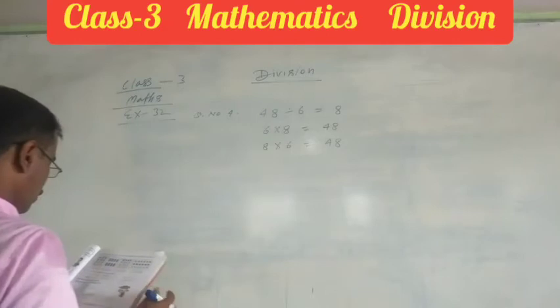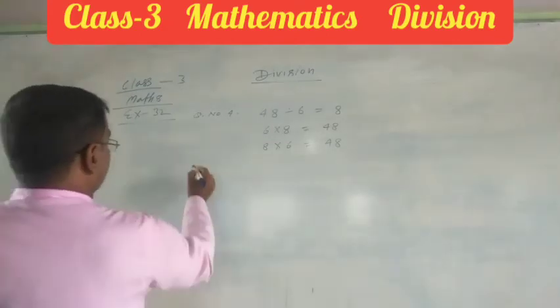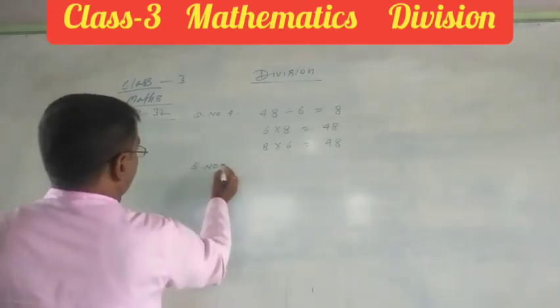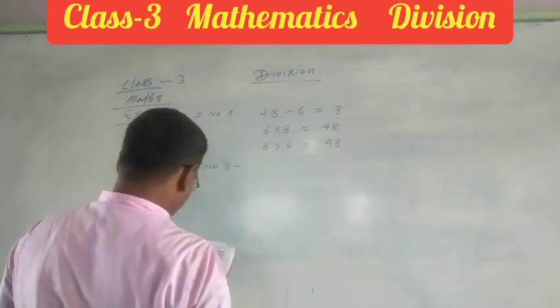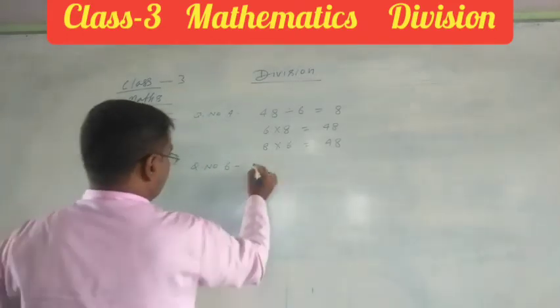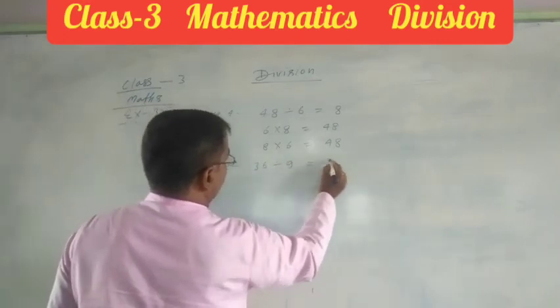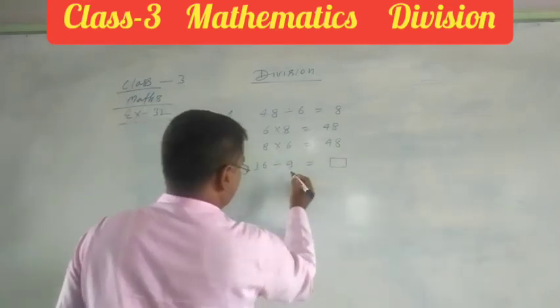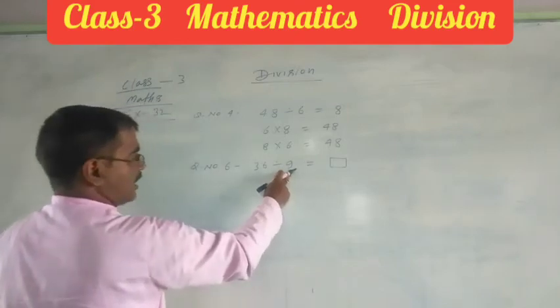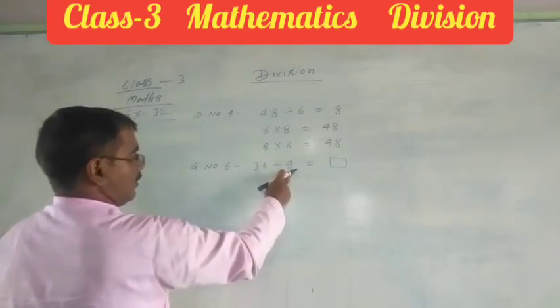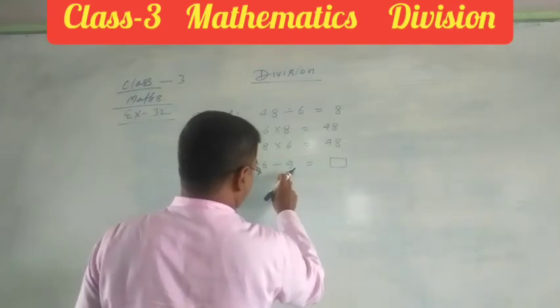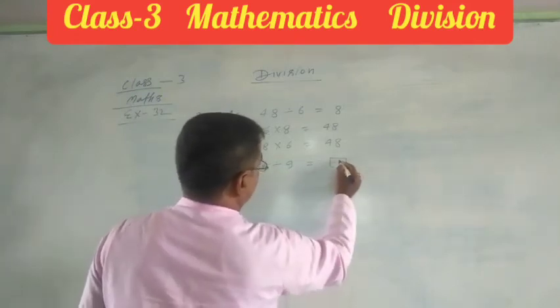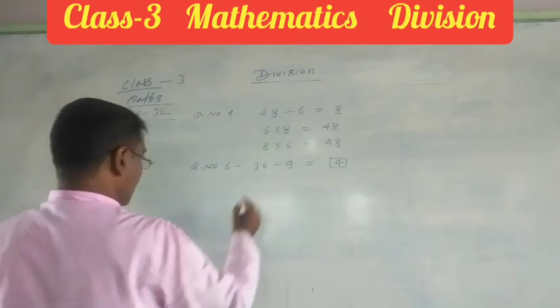Also, I teach you last question, Question number 6. Use table and find the answer. 36 divided by 9 equals what? You read table 9: 9 times 1 is 9, 9 times 2 is 18, 9 times 3 is 27, 9 times 4 is 36. So your answer is 4.